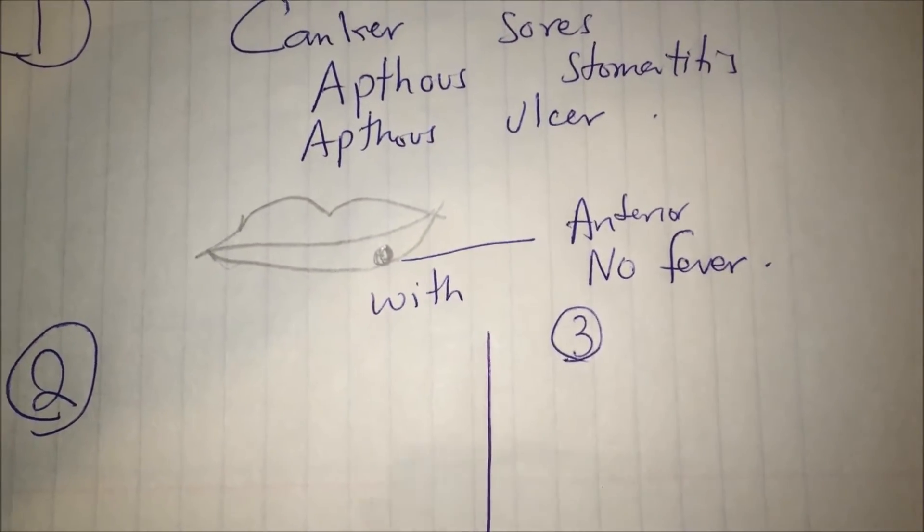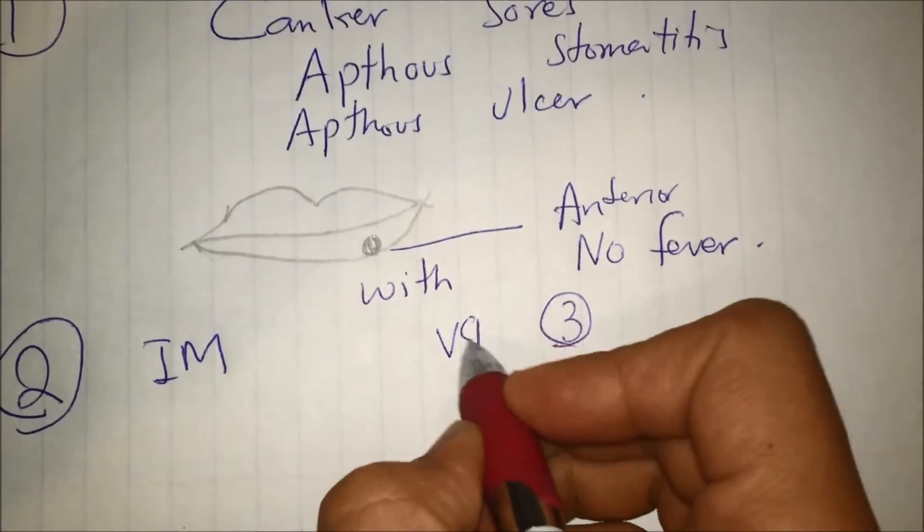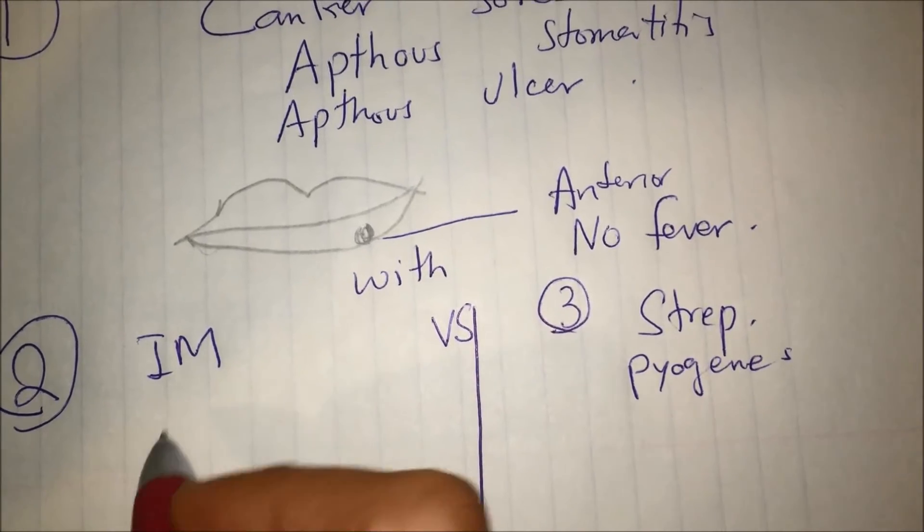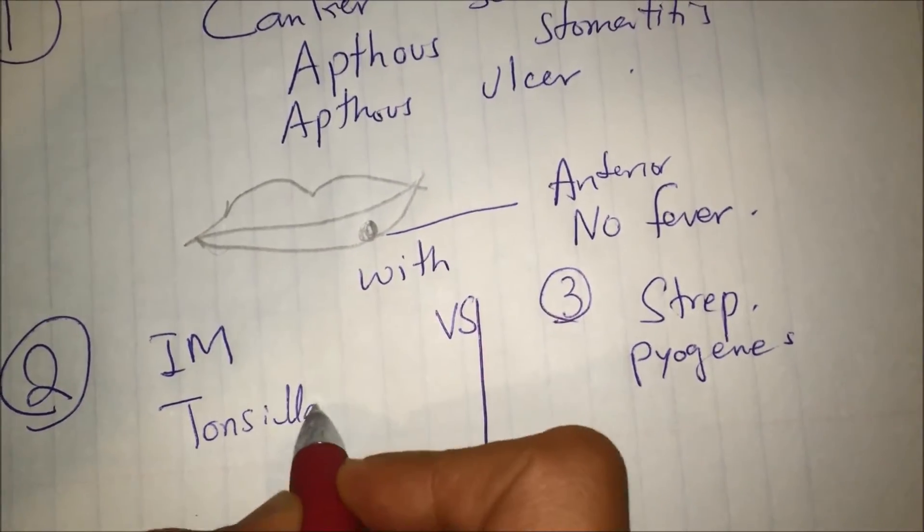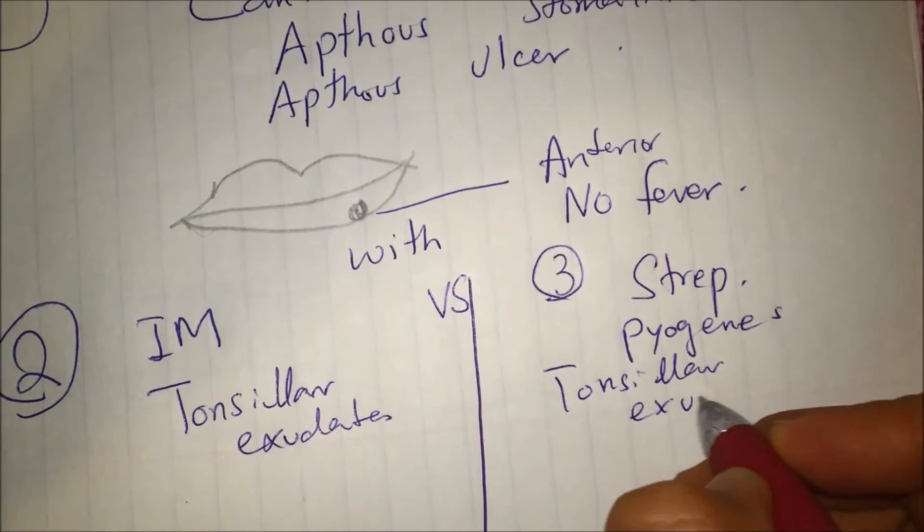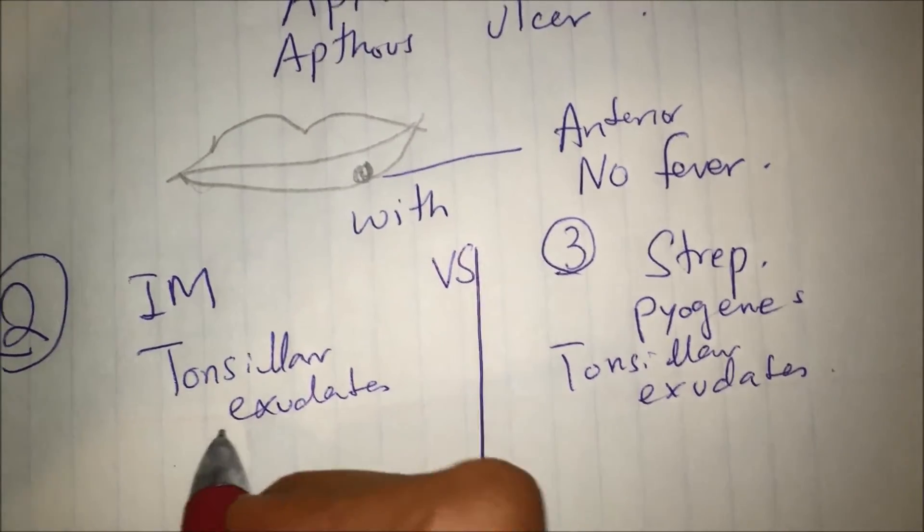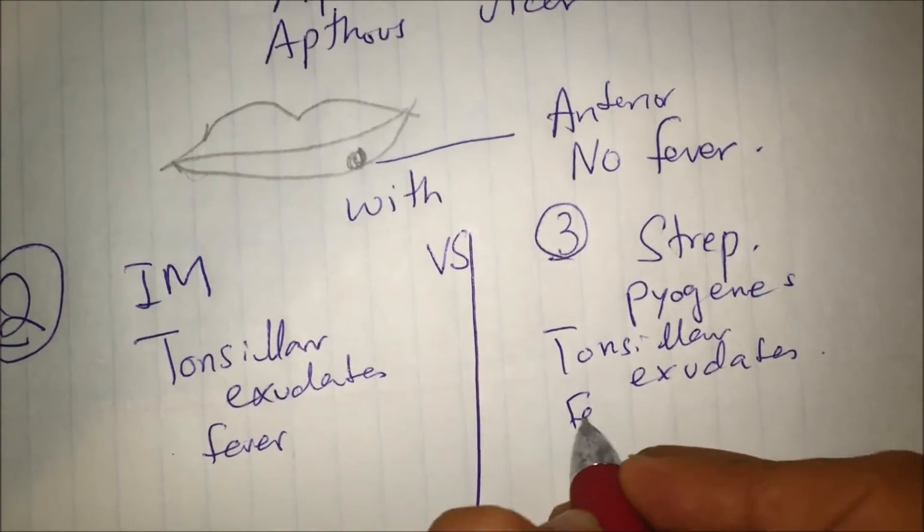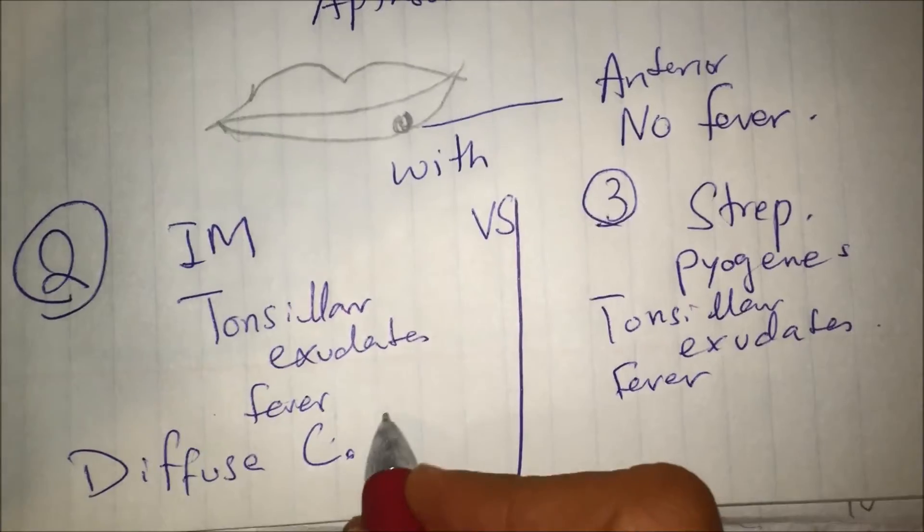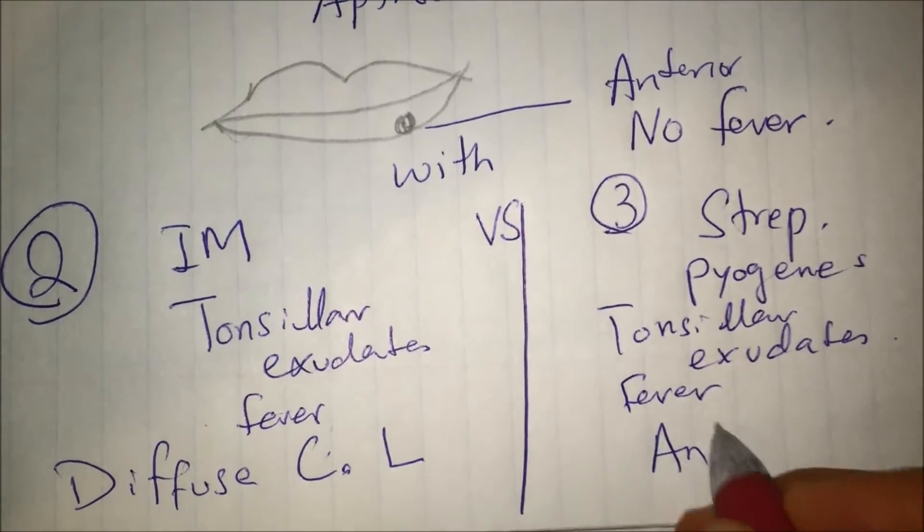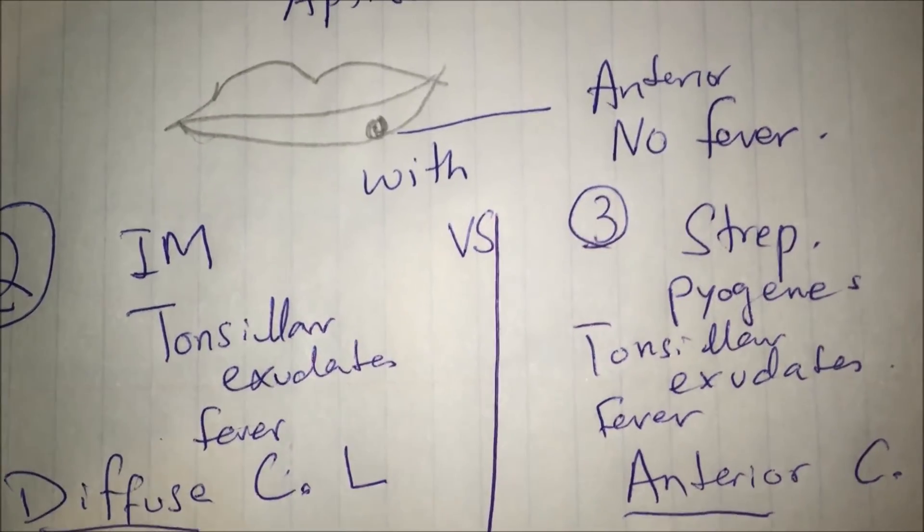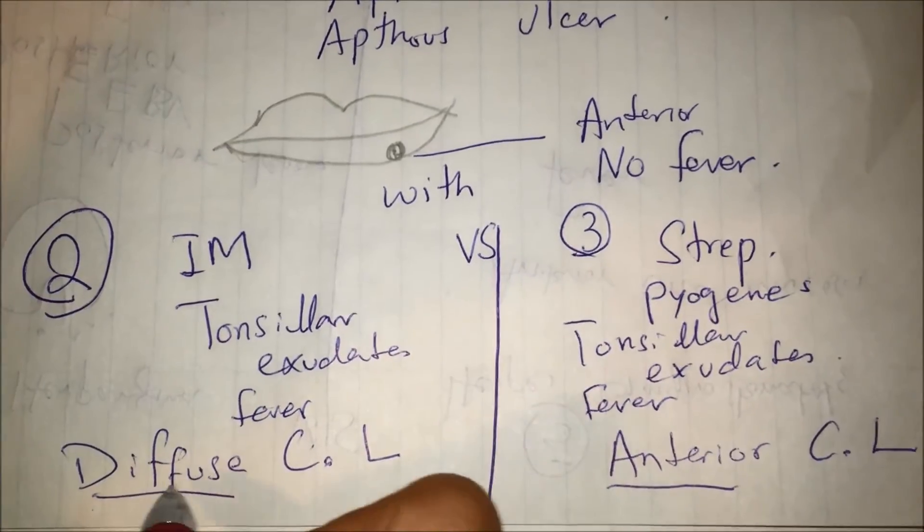IM - Infectious Mononucleosis versus Streptococcal Pyogenes. In both you will find tonsillar exudates. The difference: fever is present in both, but in IM you will find diffuse cervical lymphadenopathy, while in Strep you will just find anterior cervical lymphadenopathy.